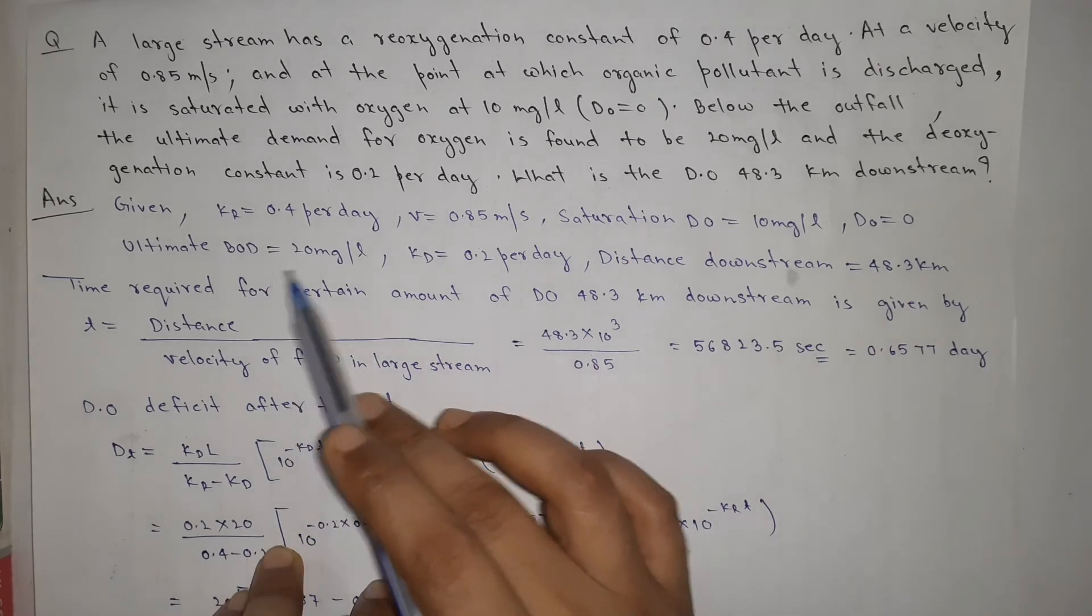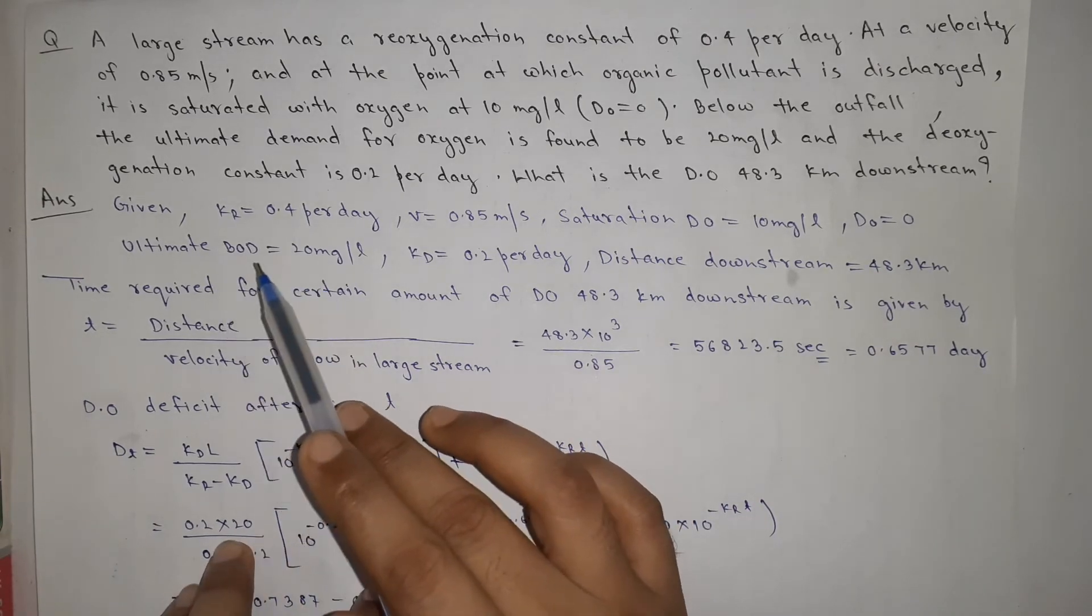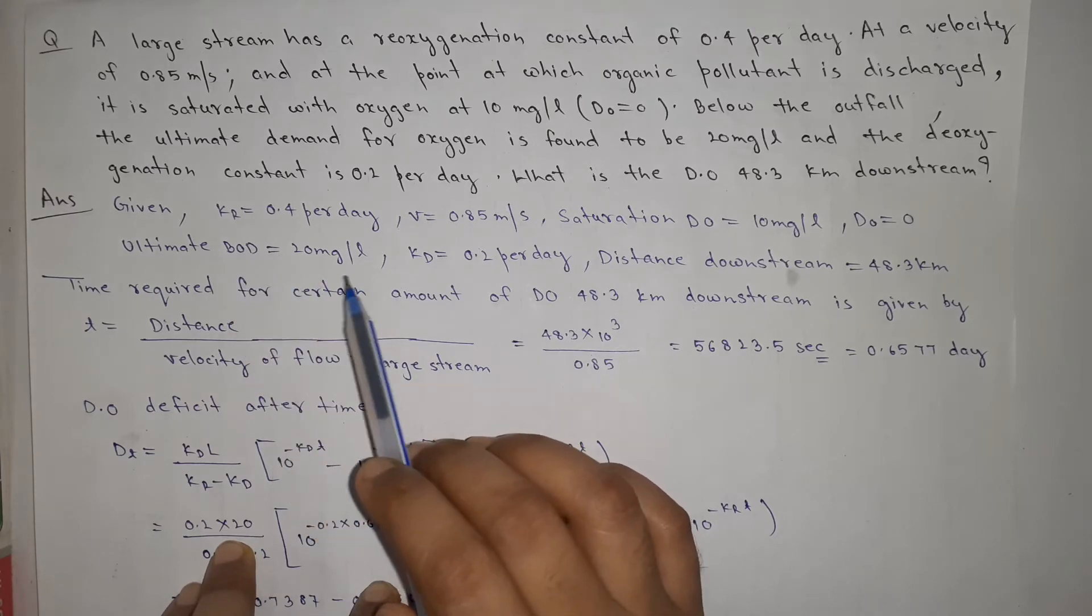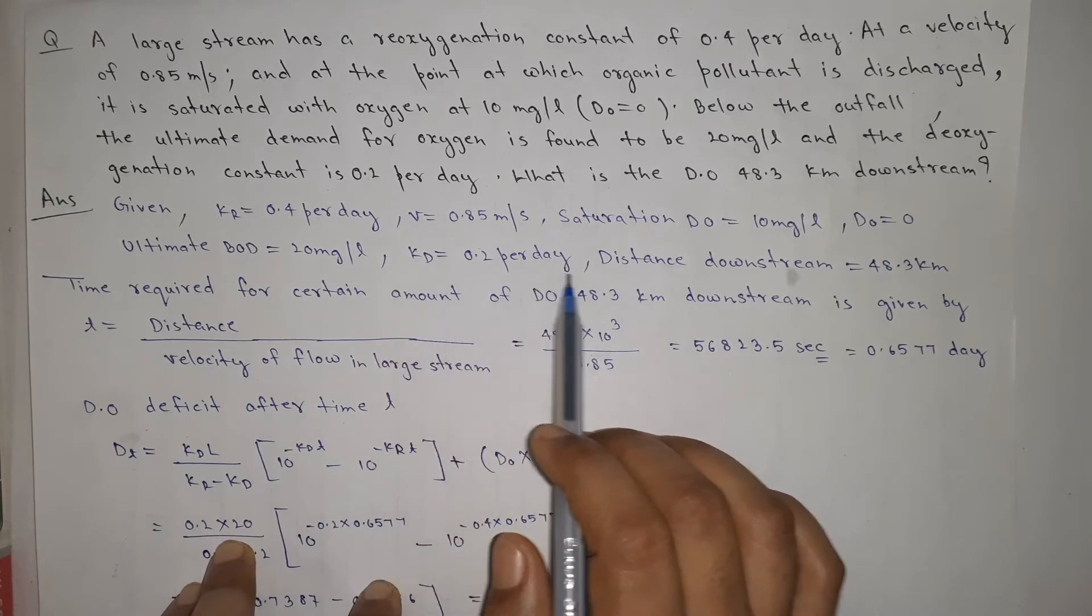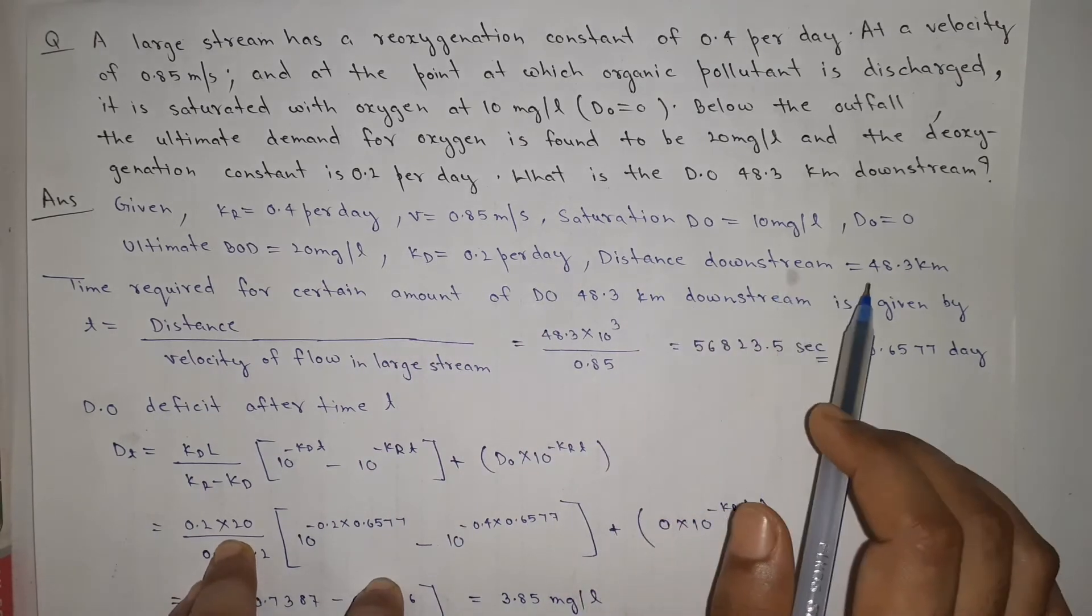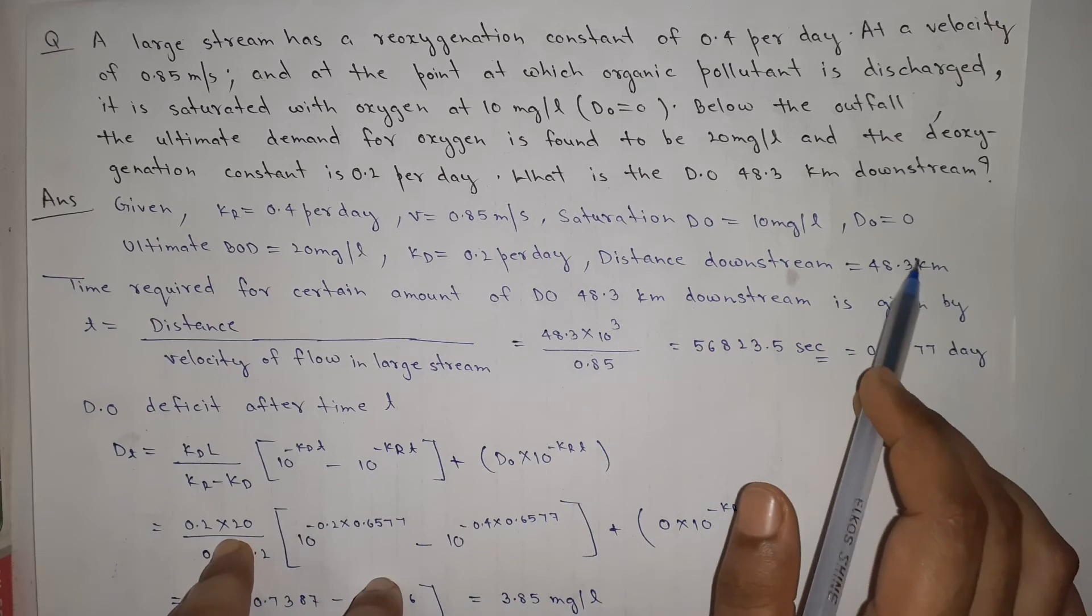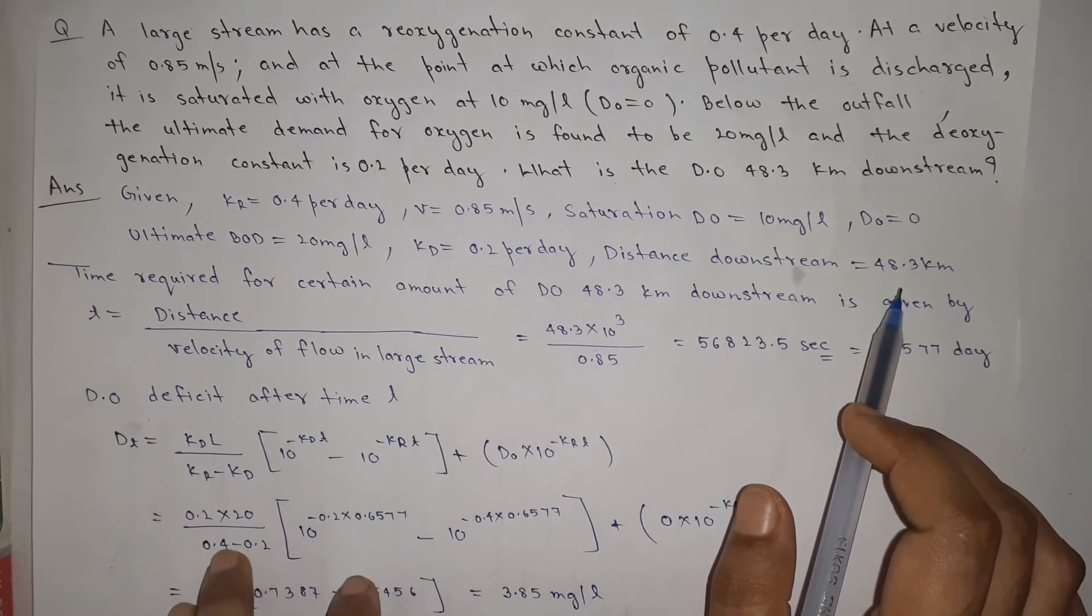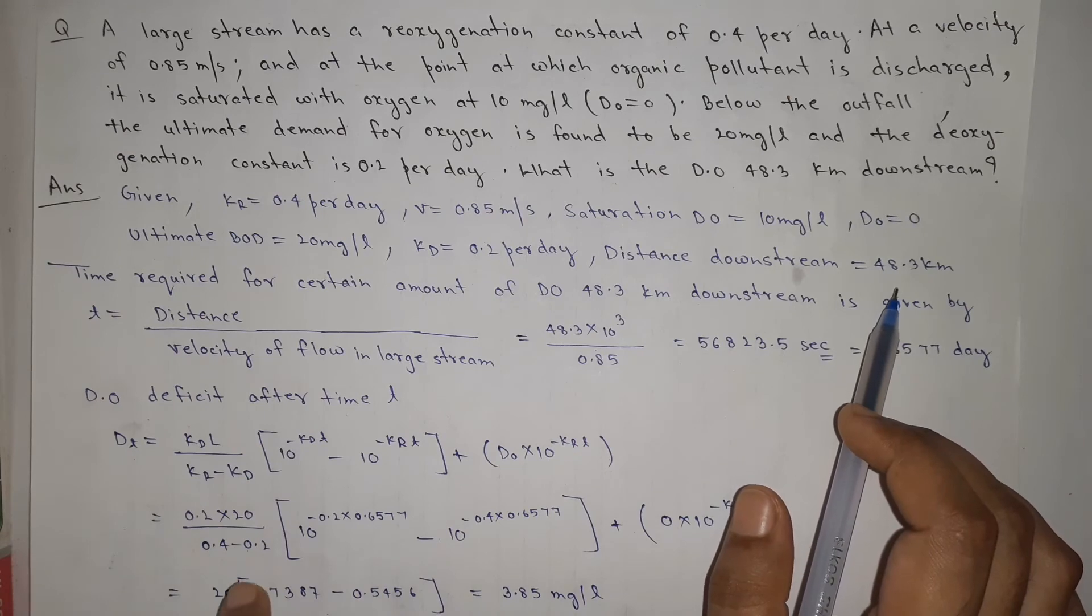Ultimate BOD of mix, when you have pollutant sewage, is 20 mg per liter. The distance given is 48.3 km, which we have to go downstream in our river.